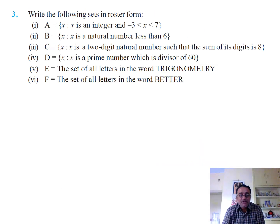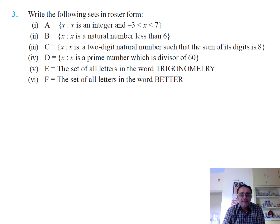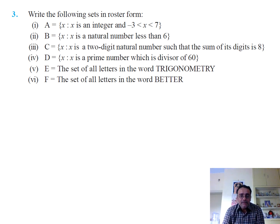Question 3: Write the following sets in roster form. The first bit is A = {x : x is an integer and -3 < x < 7}. In this interval we identify the integers: -2, -1, 0, 1, 2, 3, 4, 5, 6.